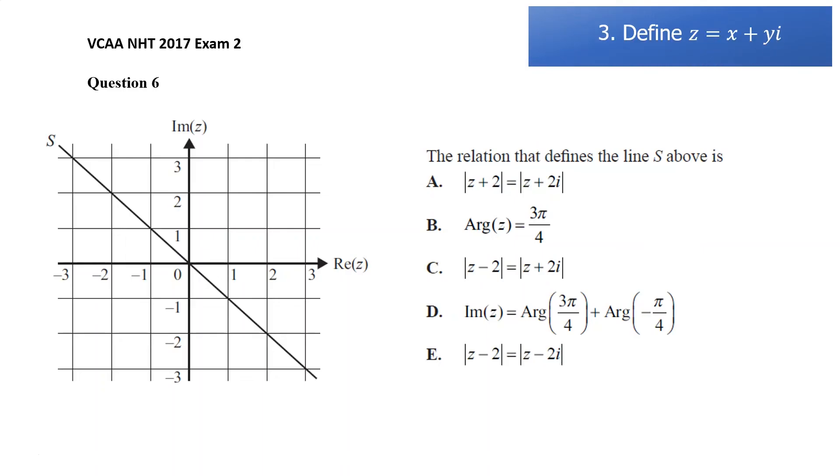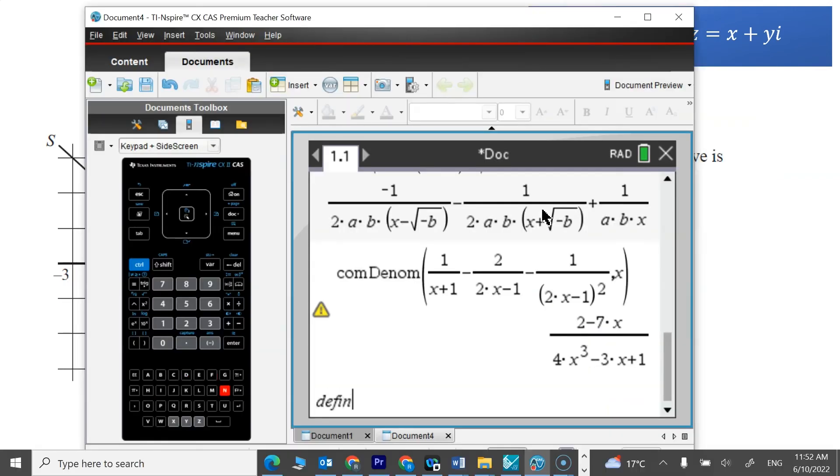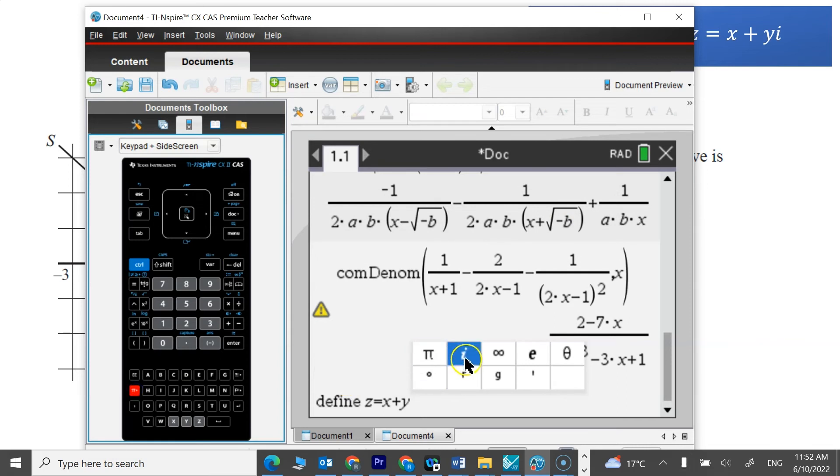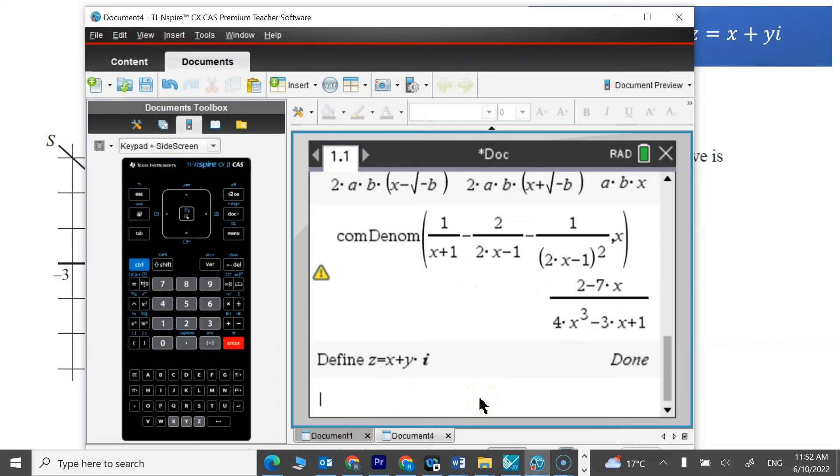And my last CAS calculator tip for the TI-Inspire on algebra, defining z as x plus yi. So this can be useful in a number of cases, but one example is where we've given these relations and we want to sketch it, or we want to identify which relation gives this graph here. So by defining z equals x plus y, I can pretty much type these in the CAS calculator and get a relation between x and y. So let's do that, define z equals x plus yi. Now we can't just type i because it needs to be like i as in the square root of negative 1, so we need to choose i from the π menu there.